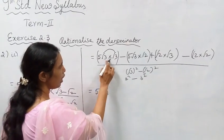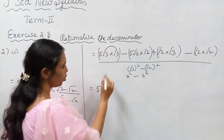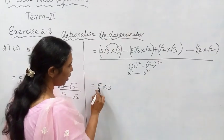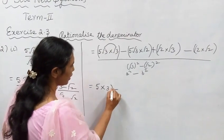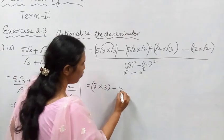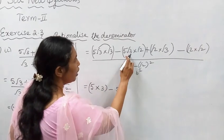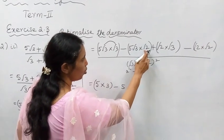Same number but they are in root. So 5 into 3 minus 5. It is √3 times √2, which gives √6.